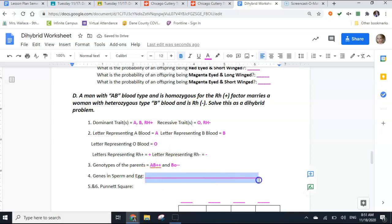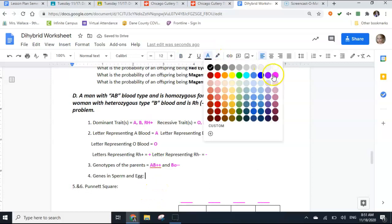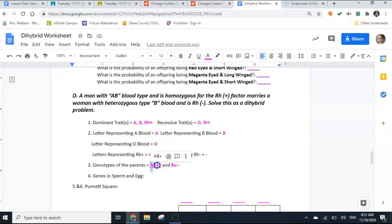Now when we do the genes in the sperm and the egg, here's what we have to do. We have to make sure that we have one letter and then one Rh in each of them.